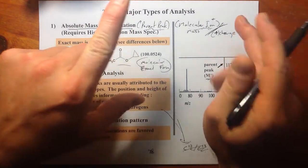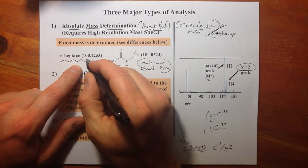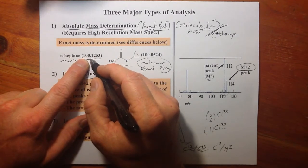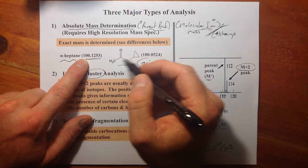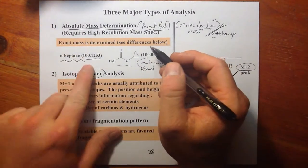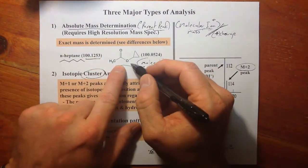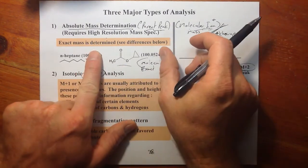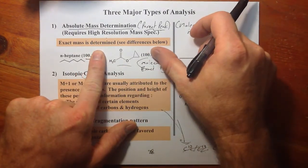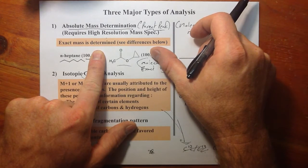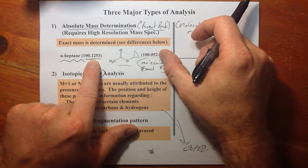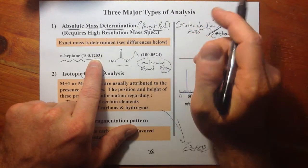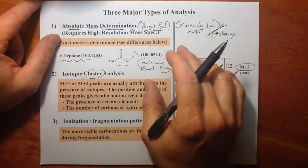Again, assuming a plus one charge, we can take n-heptane, run it, and we get an M/z value, mass to charge ratio, of exactly 100.1253. And it falls fairly close but a little different from where this ester would fall. So we could resolve these two, even though they have the same general mass, 100, they have a very different mass going to figures beyond the decimal point.